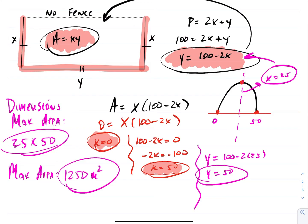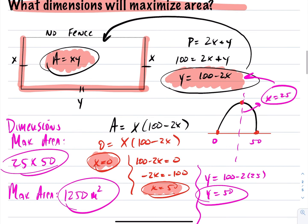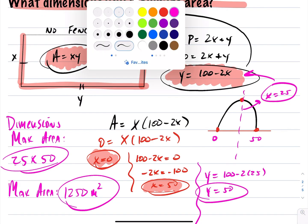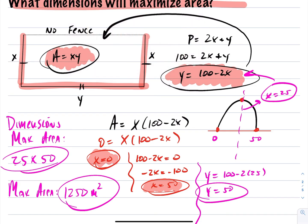You can see the adjustment from the previous question. Before, with four sides, the answer was a square. Now, with three sides, the dimensions that maximize area are 25 by 50 — not a square — giving a maximum area of 1250 square meters.